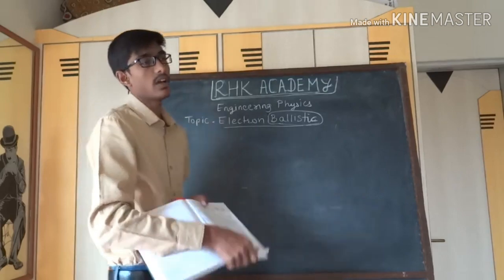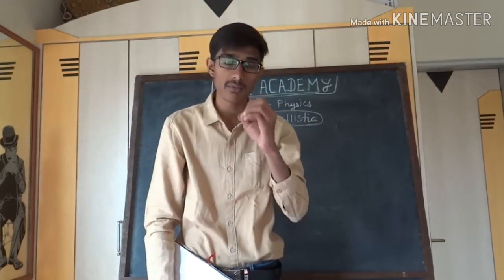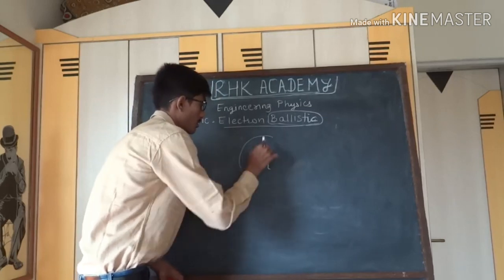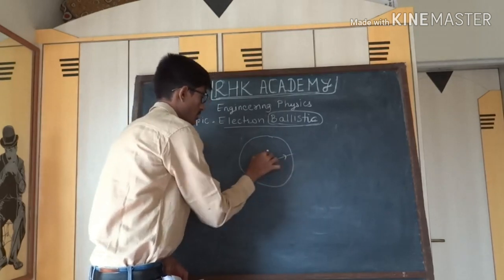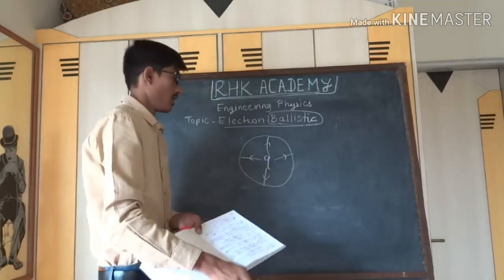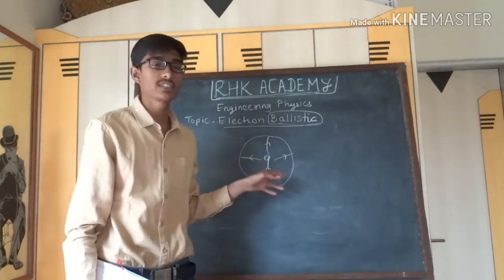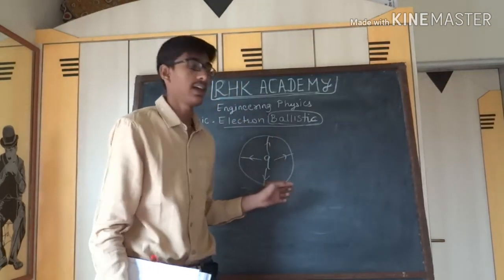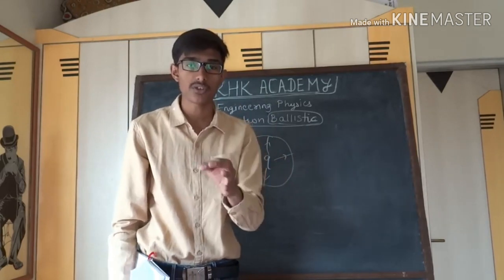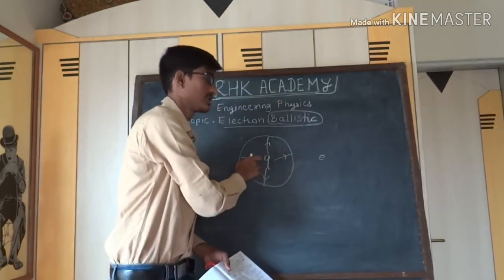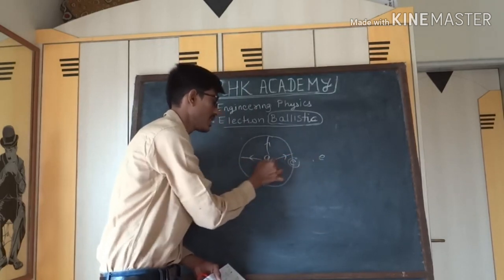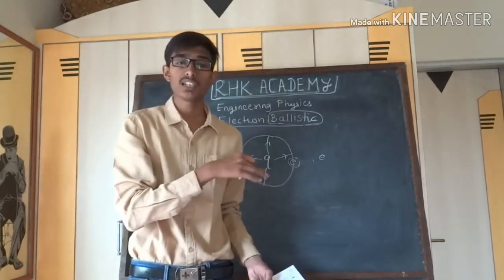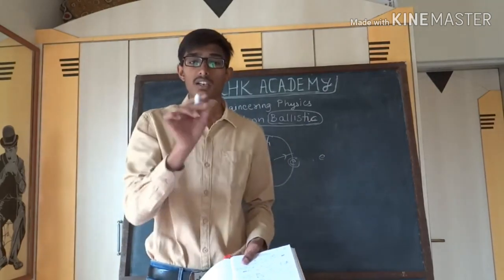Since we are starting about the electric field topic, we must know what is meant by electric field. The region surrounded by a charge in which the effect of that charge is experienced by another charge is the electric field. If we place a charge and bring another charge — positive or negative — within a specific distance, a force is applied on the incoming charge. Hence, the region in which that force is experienced due to the initial charge is called the electric field.